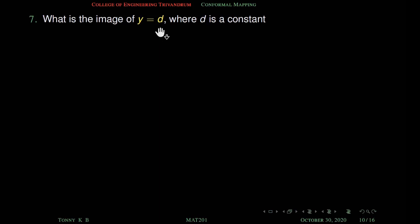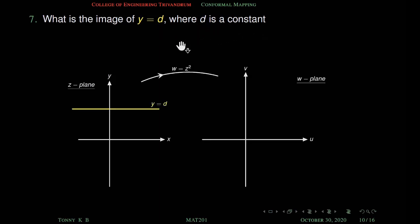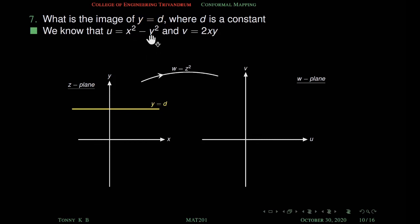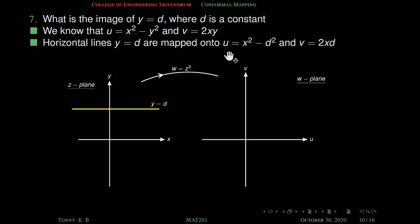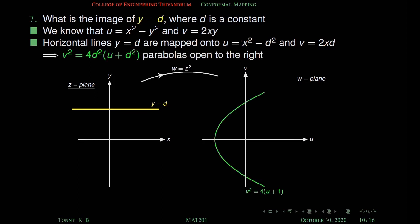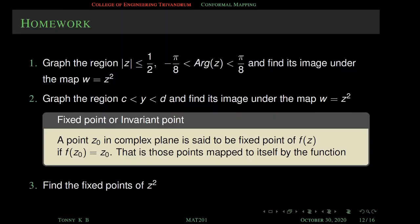Find the image of y equal to d, where d is a constant, under the mapping w equal to z square. The line y equal to d is parallel to the x-axis. With u equal to x²−y² and v equal to 2xy, when y equal to d we get u equal to x²−d² and v equal to 2xd. Eliminating x: v² equal to 4d²x², and x² equal to u+d², so v² equal to 4d²(u+d²). This is a parabola opening to the right, passing through (−d², 0). Verifying this is left as homework.